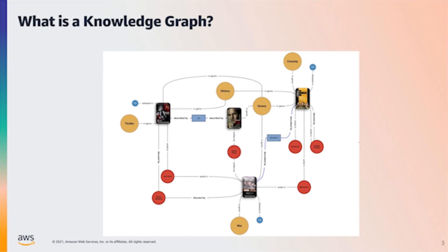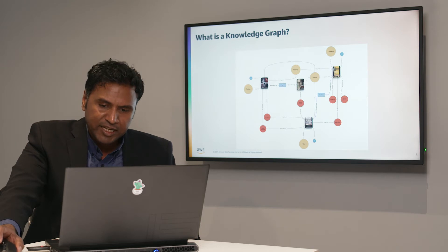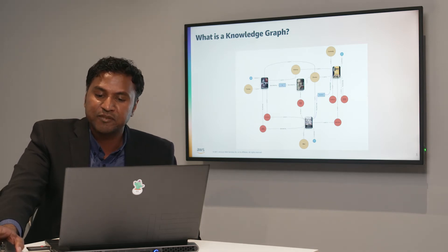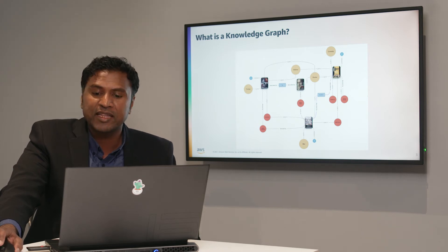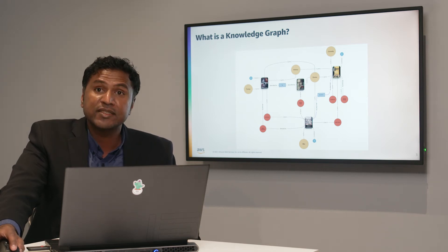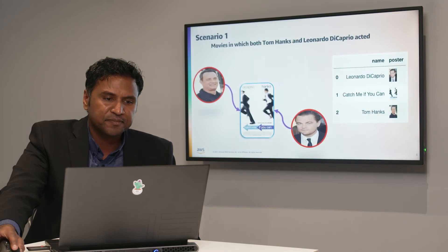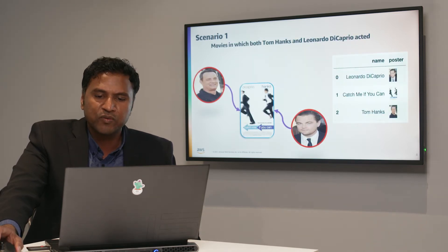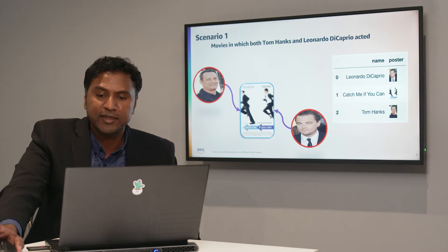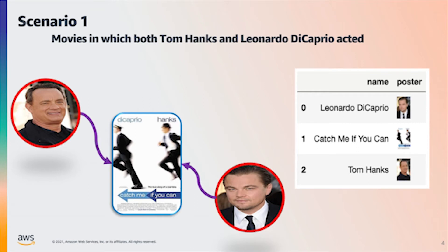Using the IMDB dataset, we built a knowledge graph by analyzing hundreds of millions of entertainment data points across 19 million names and titles, and box office results from Hollywood to Bollywood, to power our search and discovery. This knowledge graph captures the complex relationships between all these entities in a way that tabular data organizations simply cannot. Here is a simple query result that looks at movie nodes connecting both Tom Hanks and Leonardo DiCaprio — in this case, Catch Me If You Can is the only common connection.